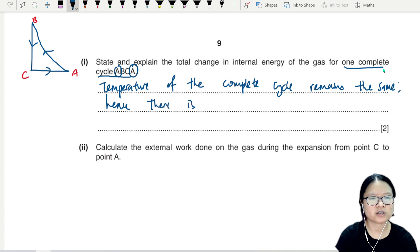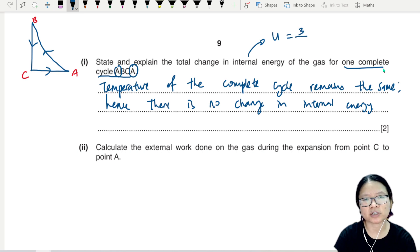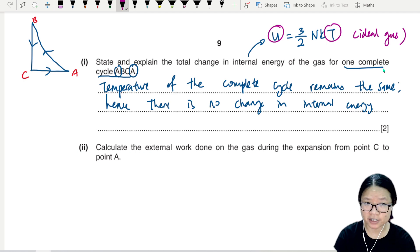Hence there is no change in internal energy. Pretty important to remember that internal energy U can be calculated using the equation three halves nkT. So the only thing that can affect your U is your temperature, of course this is for ideal gas only.